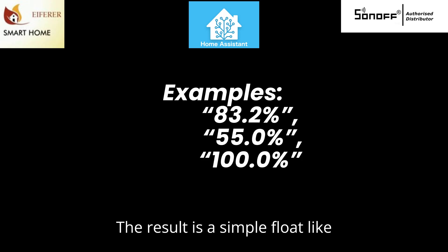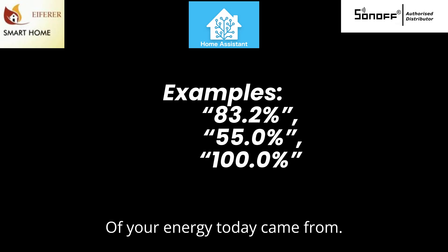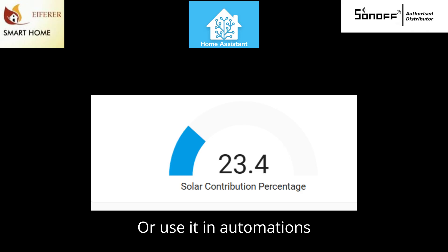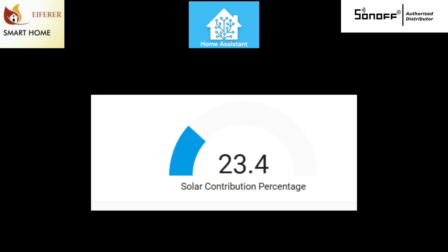The result is a simple float like 83.2, meaning 83% of your energy today came from solar. Visualize this as a gauge or use it in automations like alerts when your solar share drops too low.